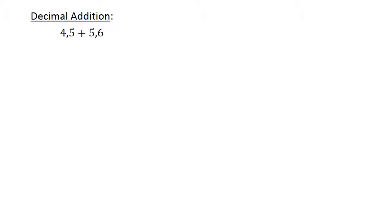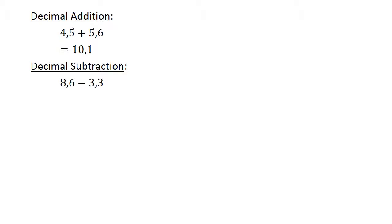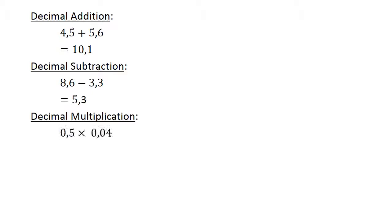4.5 plus 5.6 equals 10.1. Decimal subtraction: 8.6 minus 3.3 equals 5.3. Decimal multiplication: 0.5 times 0.04 equals 0.020.